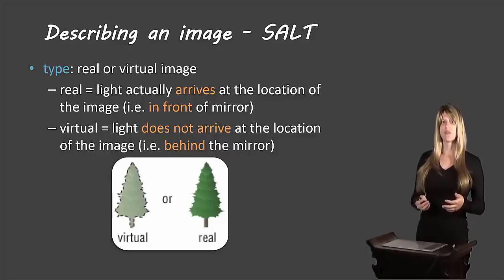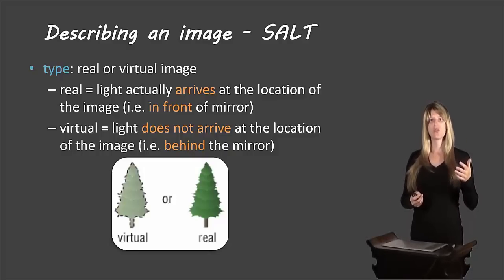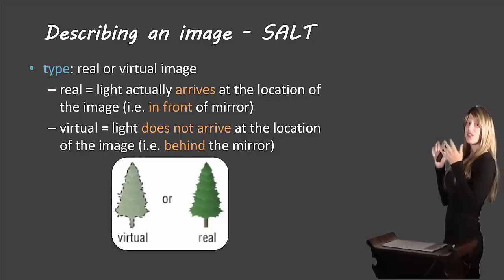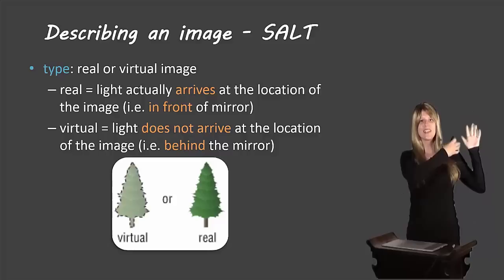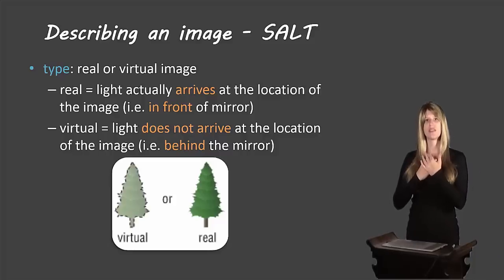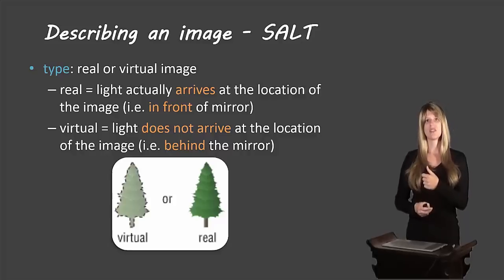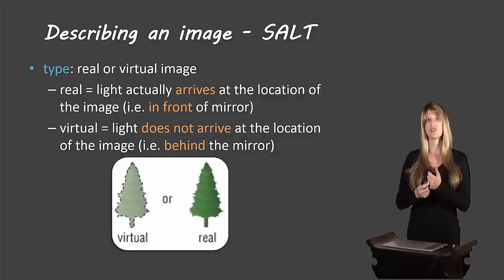Most images we're used to seeing when we look in our plane mirrors — when we're doing our hair in the morning — are virtual images. When we look in the mirror, it looks like there's someone on the other side looking back at us. We know light doesn't actually go through the mirror; the mirror is not transparent. Since light does not move through the mirror, it's not arriving at the location where we see the image, so it's virtual.